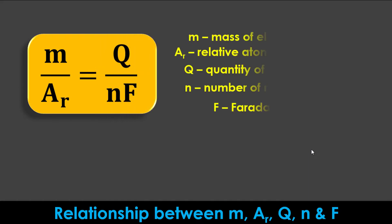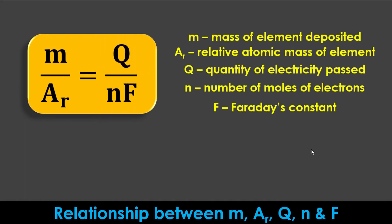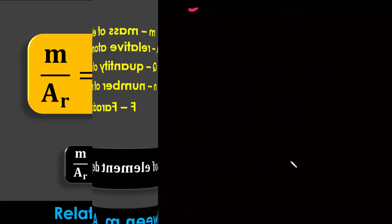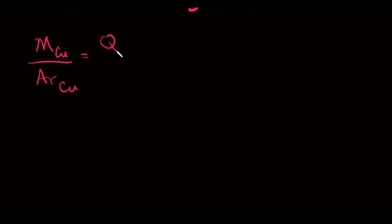Alternatively, we can use the formula M/Ar = Q/(nF), linking all the parameters. Bear in mind that M/Ar is equivalent to the number of moles of the elements deposited. For copper, make Q the subject of the formula, then substitute this into the formula linking all the parameters of aluminium together, and solve for the mass of aluminium that will be deposited.